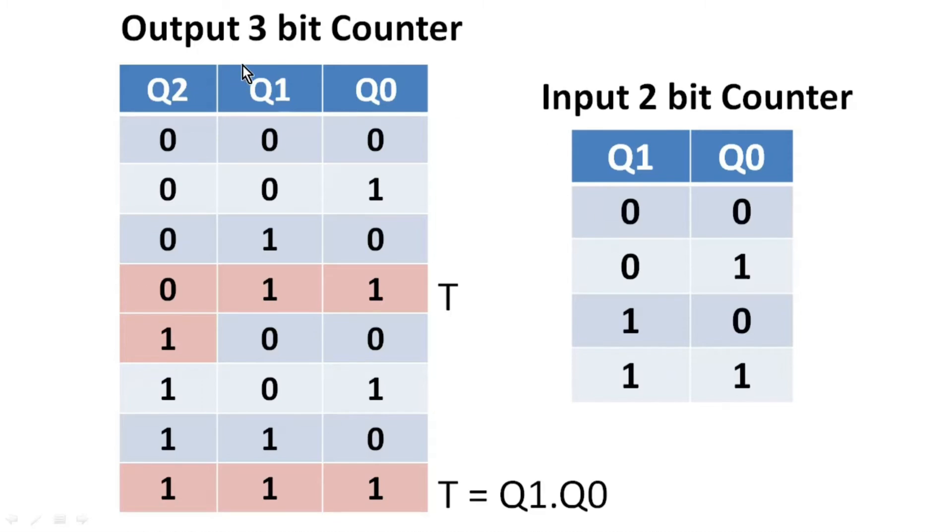And this is output 3-bit counter which is expected from us. I have given the name of this 3-bit counter as Q2, Q1 and Q0. It counts from 000 to 111 and then rolls back to 000 and keeps on going.